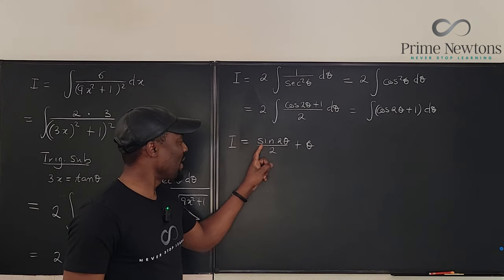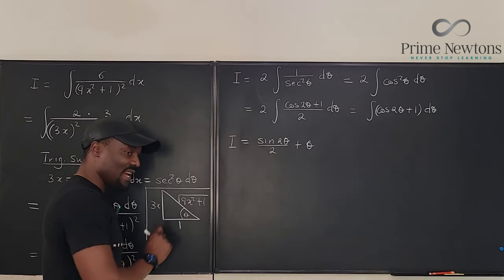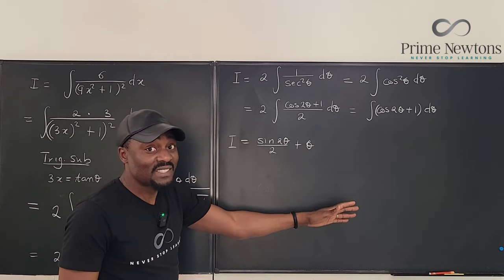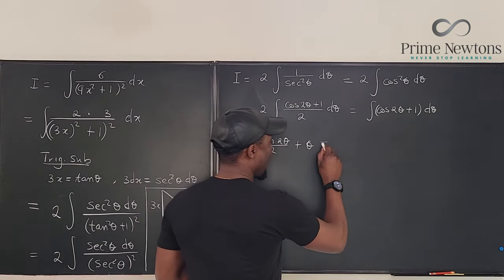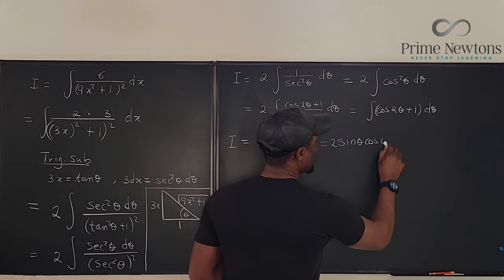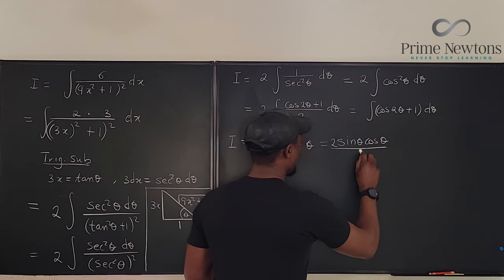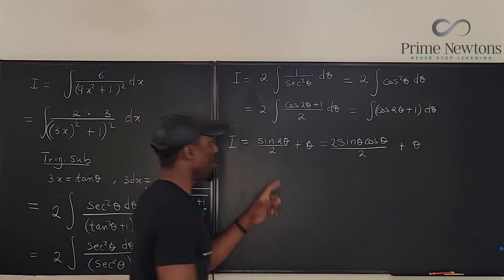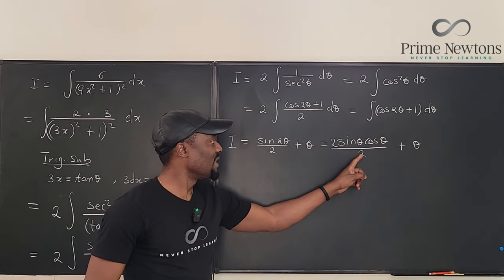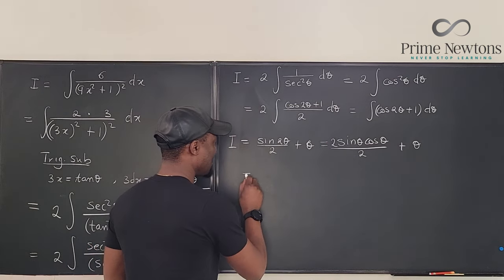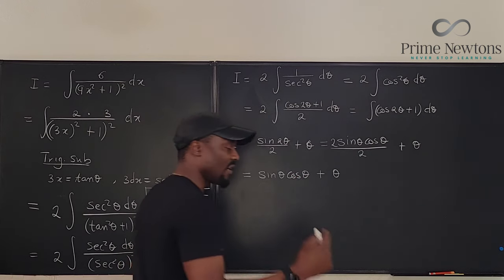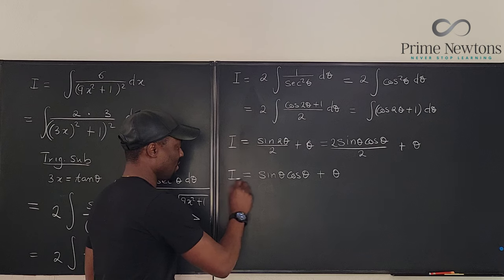So we have the three sides of our triangle and we can find our answer. Well the angle we have is theta. But the answer we have is 2 theta. We don't know what sine 2 theta is. We have to write an identity for it. So we have to rewrite it as 2 sine theta cosine theta. That's what sine 2 theta is, divided by 2 plus theta. This 2 divides this 2. So what we have is sine theta cosine theta plus theta.